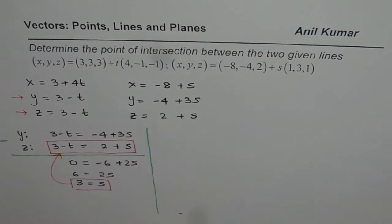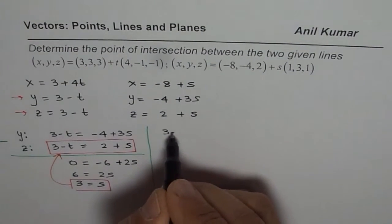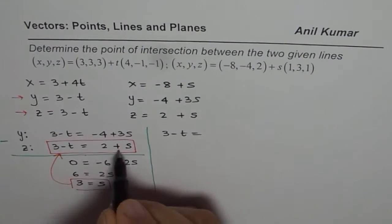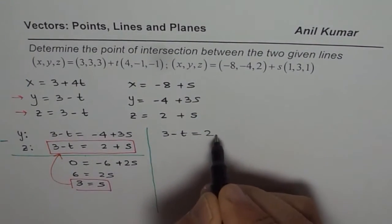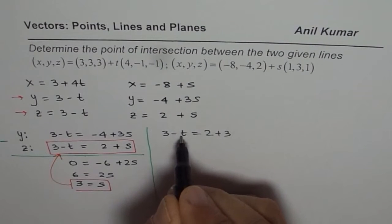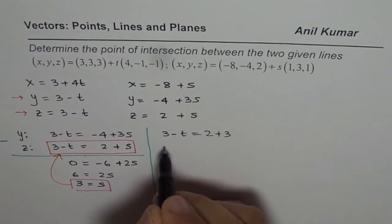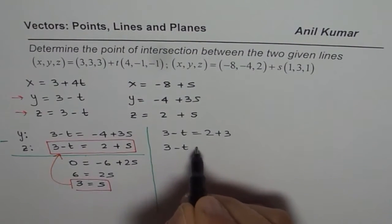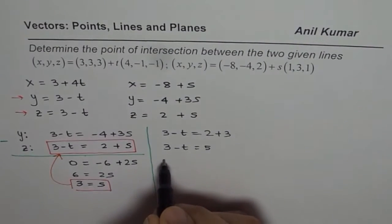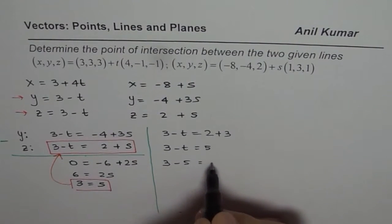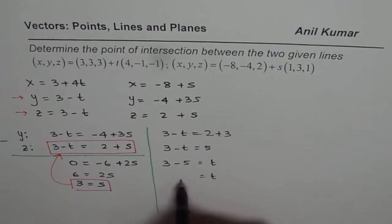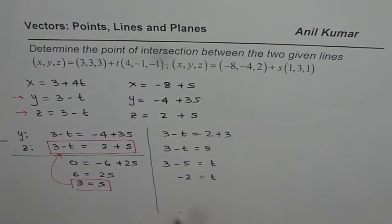So this is what I am thinking. You just substitute s as 3 here. So once I do that, I get 3 minus t equals to 2 plus 3, 2 plus 3. So I get the value of t from this equation. We say 3 minus t equals to 5, and 3 minus 5 equals to t, or t equals to minus 2.